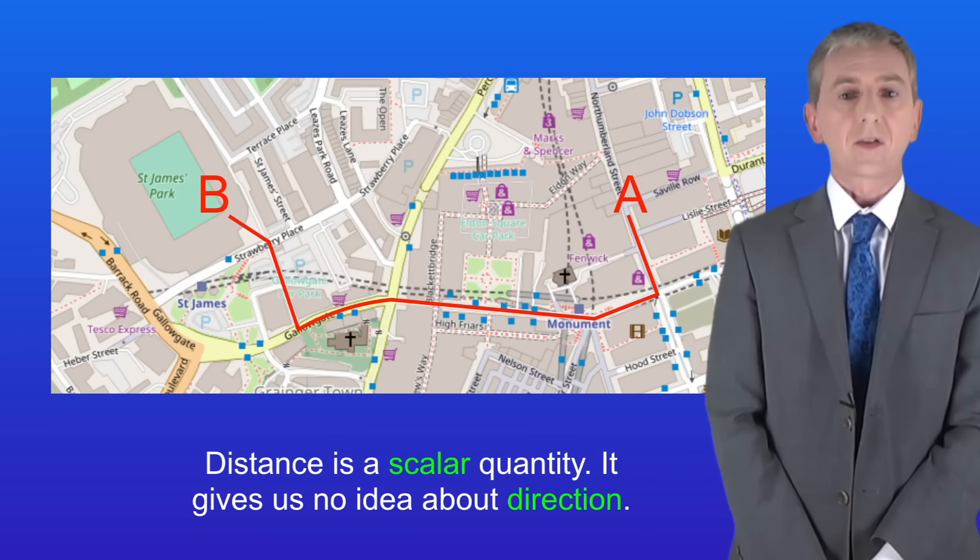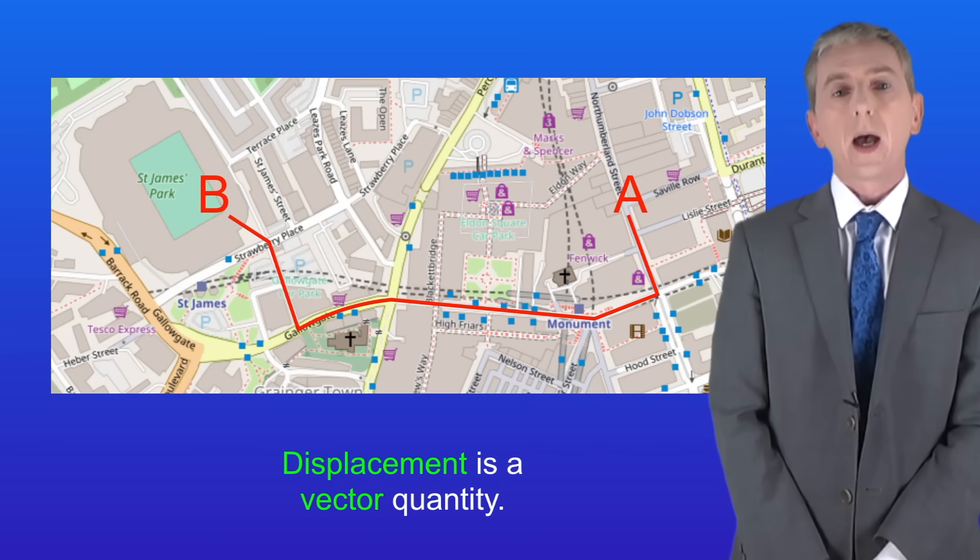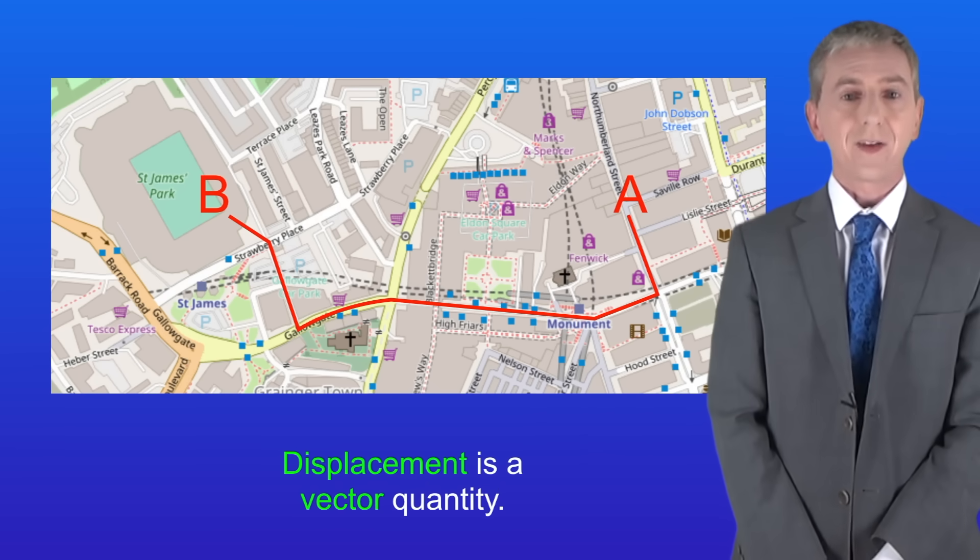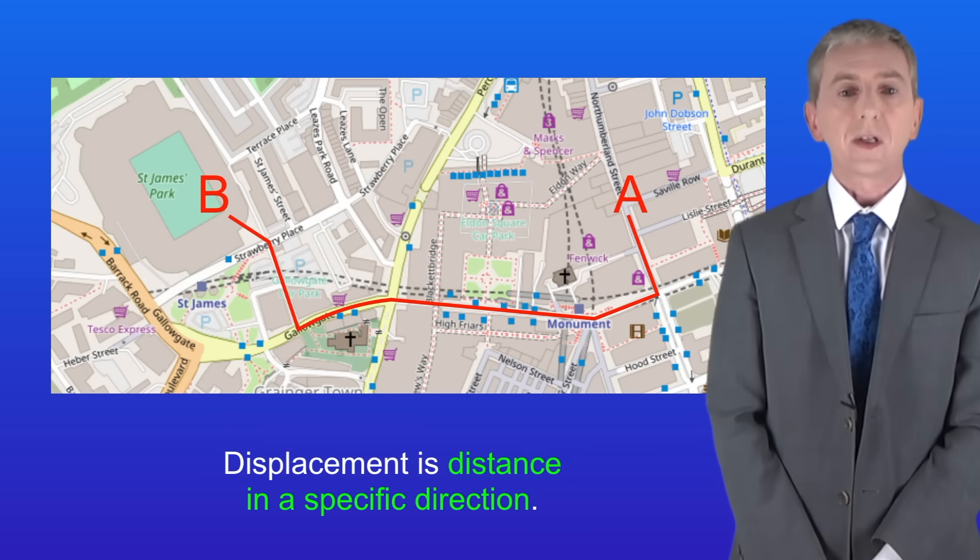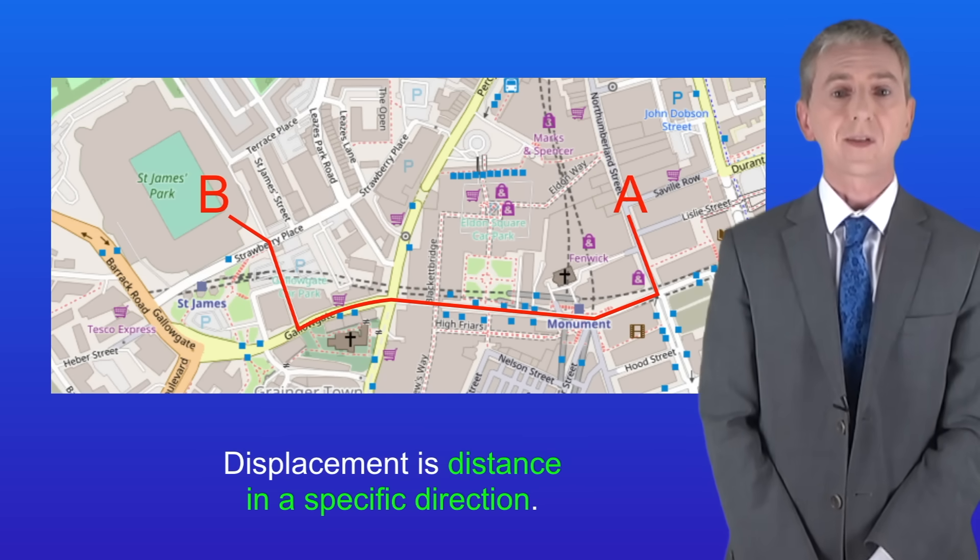Going back to the previous example, we saw that distance is a scalar quantity because it gives us no idea about direction. However, displacement is a vector quantity, and that's because displacement is distance in a specific direction.